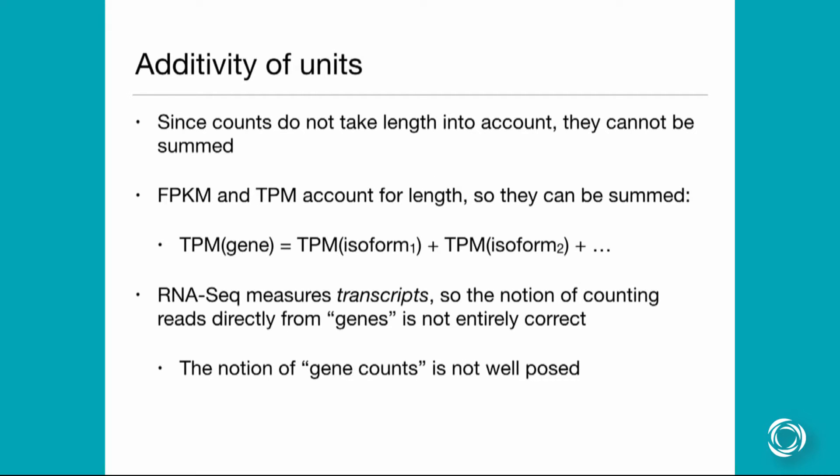Just a comment about the additivity of units. If you want to take some aggregate of things, counts can't be summed across many different features, and the reason for that is this length bias. If two transcripts are of different length then the relative rate of them being sequenced is different just due to the length and then you can't sum them for that reason. FPKM and TPM account for length so they can be summed, so if you in principle wanted the TPM of some gene you can take the sum of all the compatible isoforms and you get the expression of that gene.